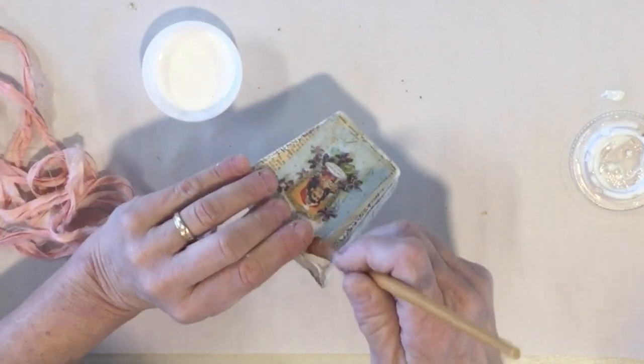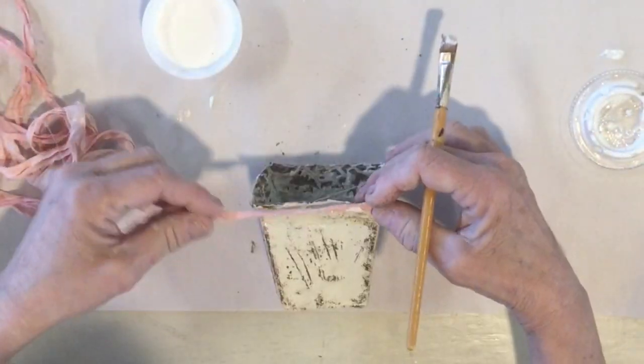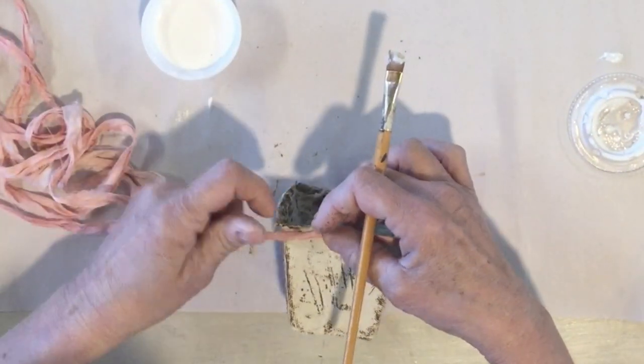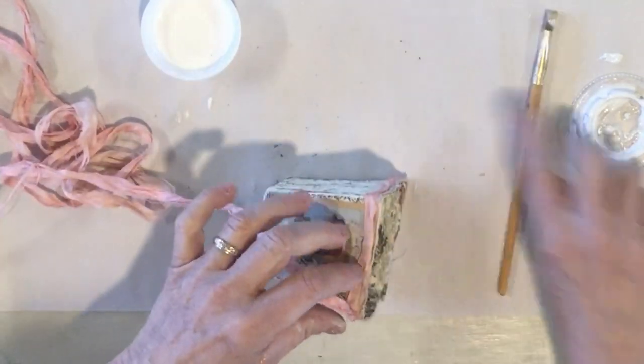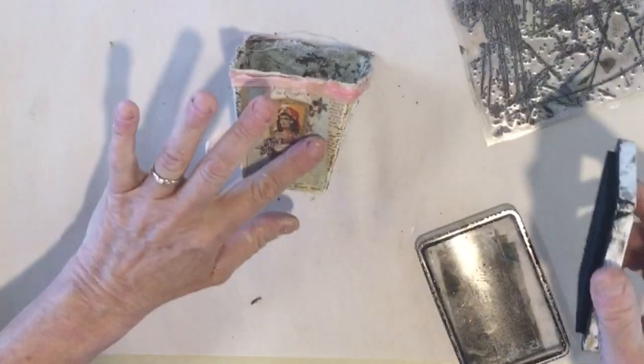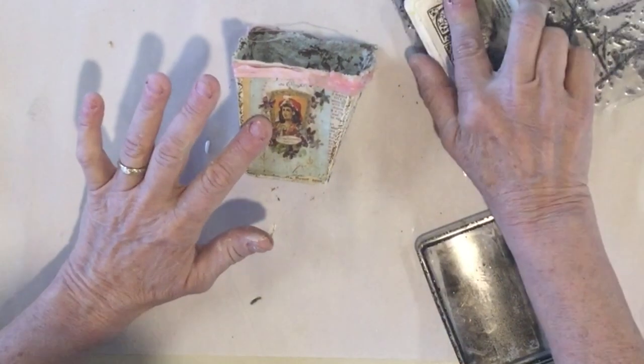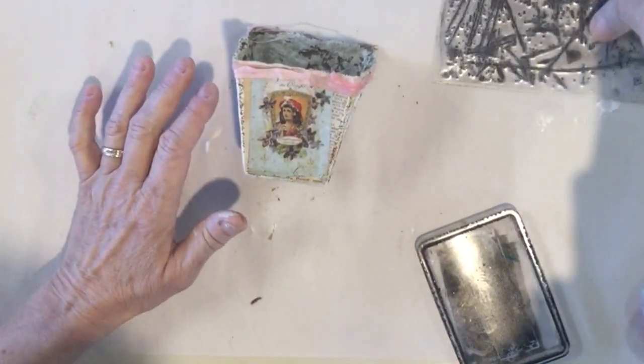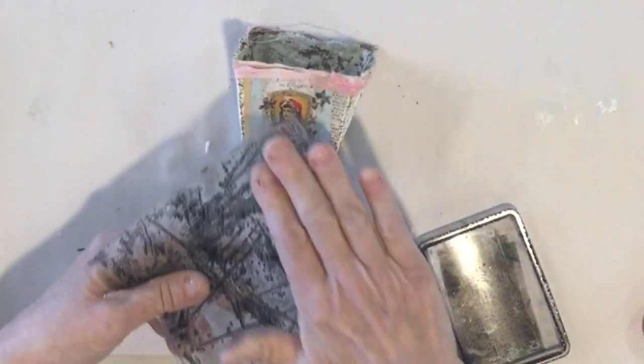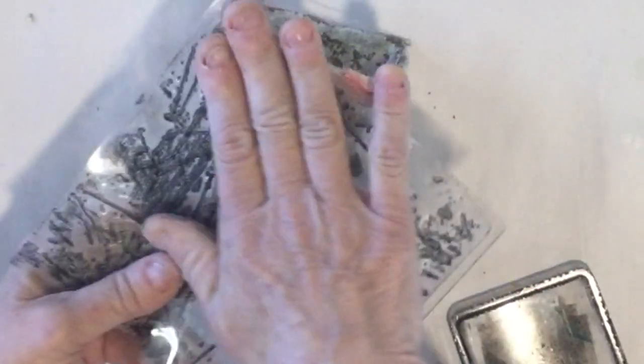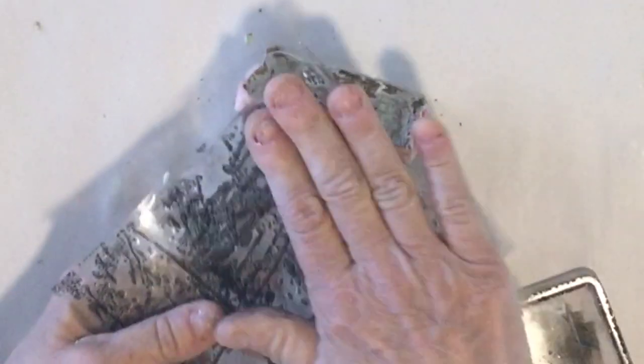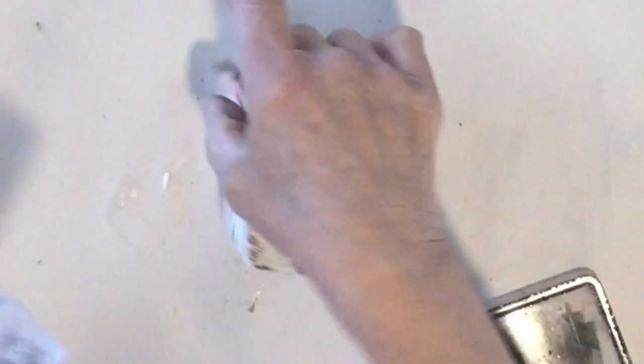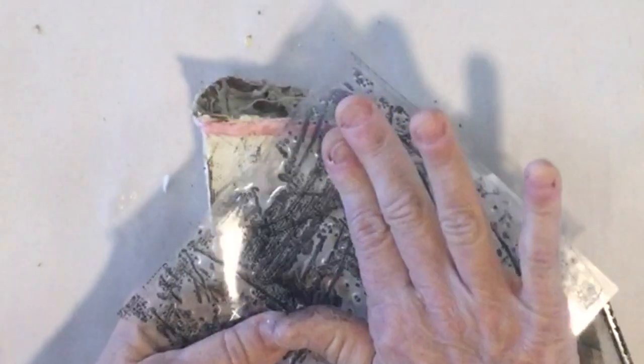I want a little bit of this chippy paint over the top of my transfer. So now that I've got it on there, I'm going to just add a little around over the transfer and even over this ribbon.